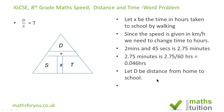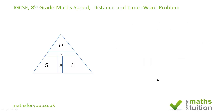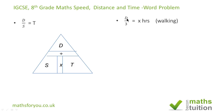Now if D is the distance from home to school — if we divide distance by speed we get time. So if the speed is three kilometers an hour, dividing the distance by three gives the time it takes to walk to school, which is x hours. That means the distance is three times x kilometers.